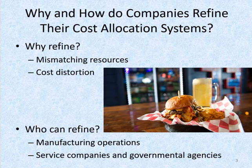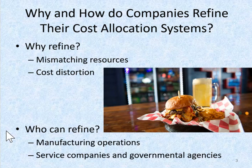Simple systems result in over-costing or under-costing of jobs — we call that cost distortion, meaning we're assigning too much or too little cost to a specific product. Manufacturing operations can better allocate overhead to reduce cost distortion, and service companies and governmental agencies can also benefit from refined cost allocation systems. We'll be describing how refined cost allocation systems can be used to better allocate manufacturing overhead, meaning indirect manufacturing costs, to specific products and to reduce cost distortion. The same principles apply to allocating any indirect costs to any cost object.